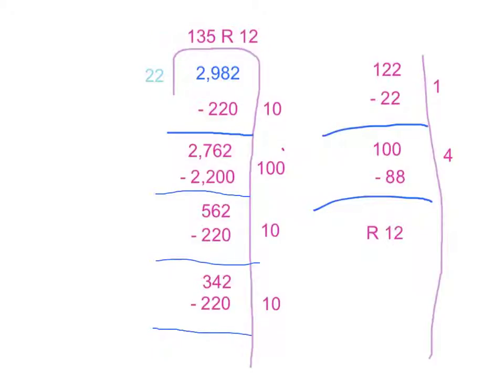The first thing I did was 22 divided by 2,982. Then I took away 220, and that's ten 22s that can fit in there.